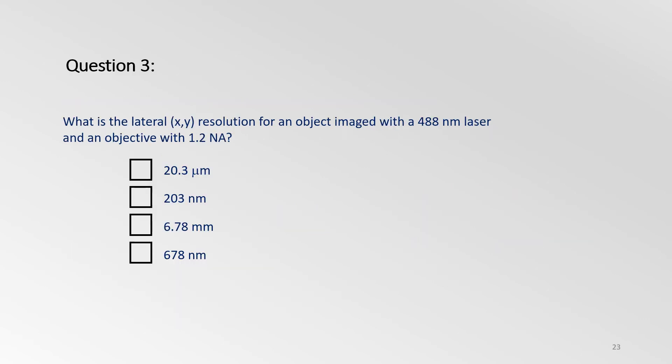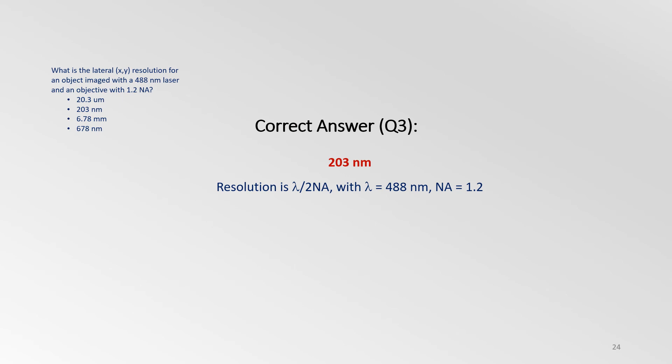Okay, what is the lateral resolution for an object imaged with a 488 nanometer laser and an objective with 1.2 NA? 20.3 microns, 203 nanometers, 6.78 millimeters, or 678 nanometers? Remember that resolution can be estimated from the formula lambda over 2 NA. So the answer would be 203 nanometers.